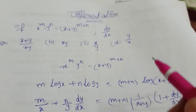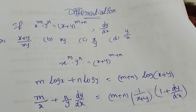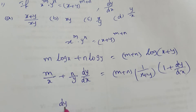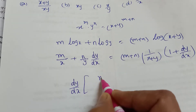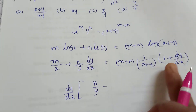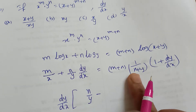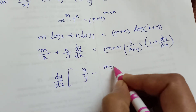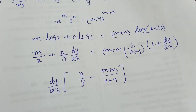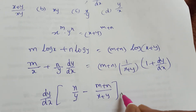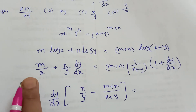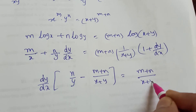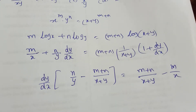Now we want dy by dx. Then common them — collect dy by dx terms. I am collecting dy by dx here: n by y minus m plus n by x plus y. These are the two terms containing dy by dx. That term goes to the other side — it will be negative. Then the right side is m plus n by x plus y minus m by x.